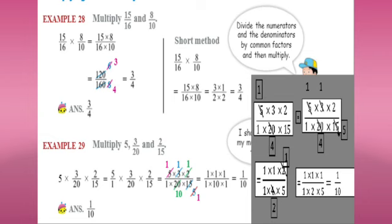Let us see an example of multiplying a fraction by a fraction: multiply 15 by 16 and 8 by 10. There are two methods. The first method is to multiply the numerators, then multiply the denominators, and then divide by common factors. So 15 into 8 by 16 into 10 gives 120 by 160. The common factor between 120 and 160 is 20. Dividing gives 6 by 8. Again the common factor between 6 and 8 is 2, giving the answer 3 by 4.